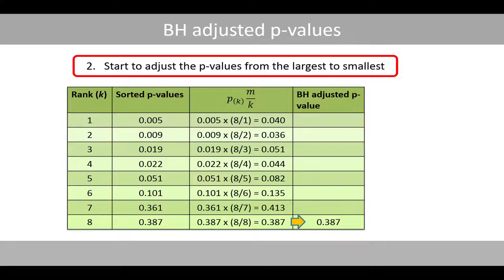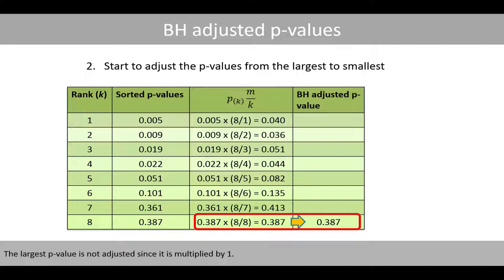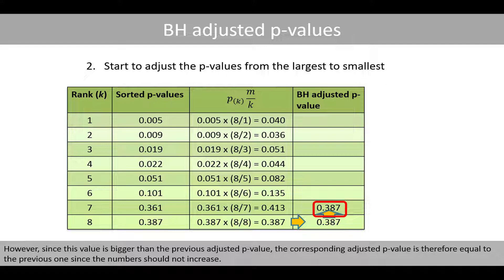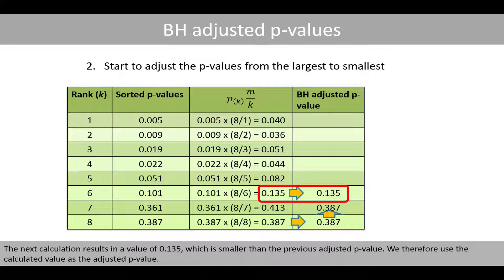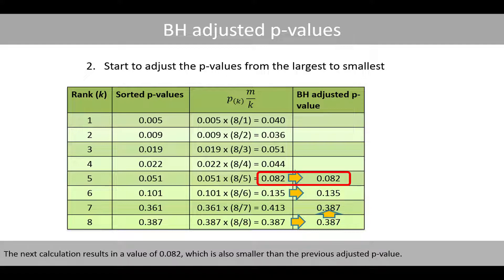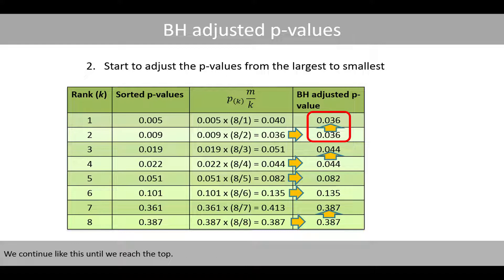Then we start to adjust the p-values from the largest to smallest. The largest p-value is not adjusted, since it is multiplied by one. The next largest p-value is calculated to 0.413. However, since this value is bigger than the previous adjusted p-value, the corresponding adjusted p-value is therefore equal to the previous one, since the number should not increase. The next calculation results in a value of 0.135, which is smaller than the previous adjusted p-value, so we use the calculated value. The next calculation results in 0.082, which is also smaller than the previous adjusted p-value. We continue like this until we reach the top.